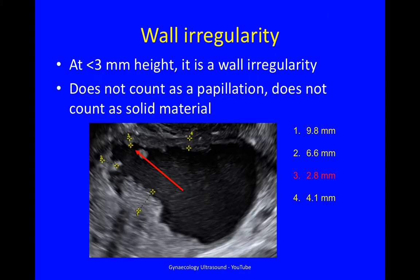Here are some papillations. This is a papillation, and that one is, and that one. But this one, you can see that it only measured 2.8 mm, so it does not count as a papillation, but it counts as a wall irregularity.